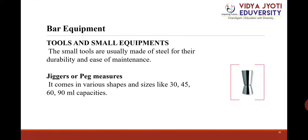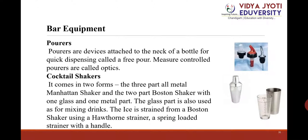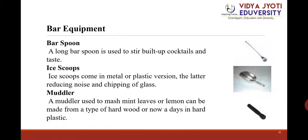Small bar tools are usually made of steel for durability and ease of maintenance. Jiggers or peg measurers come in various shapes and sizes: 30 ml, 45 ml, 60 ml, and 90 ml capacities. Pourers are devices attached to the neck of a bottle for quick dispensing, called a free pour; measure control pourers are called optics. Cocktail shakers come in two forms: the three-part all-metal Manhattan shaker and the two-part Boston shaker with one glass and one metal part. The glass part is also used for mixing drinks. Ice is strained from a Boston shaker using a Hawthorne strainer, a spring-loaded strainer with a handle. A long bar spoon is used to stir built-up cocktails and to taste.